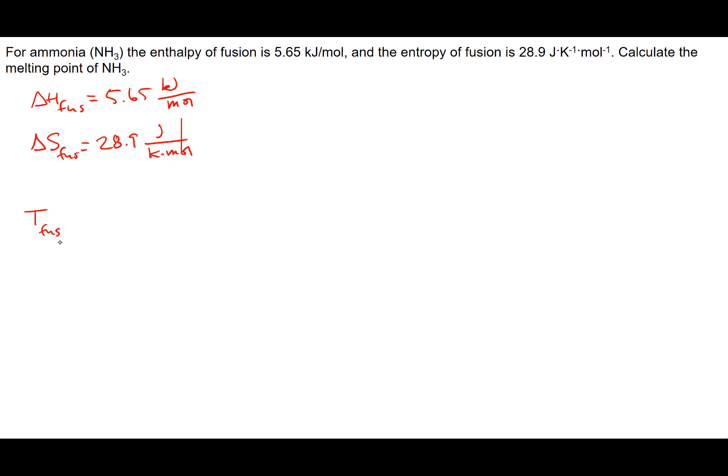The way that we could do this is simply by using the Gibbs free energy equation. So if we have delta G, we know that that's going to be equal to delta H minus T delta S.